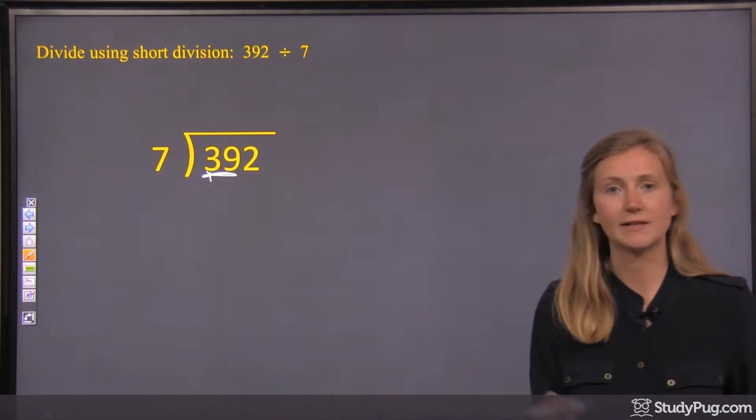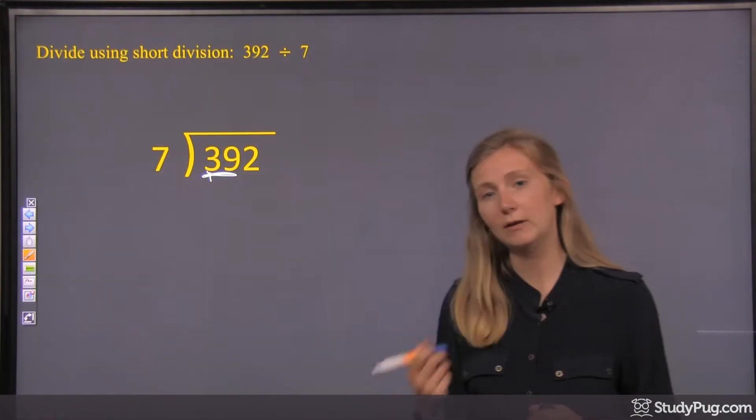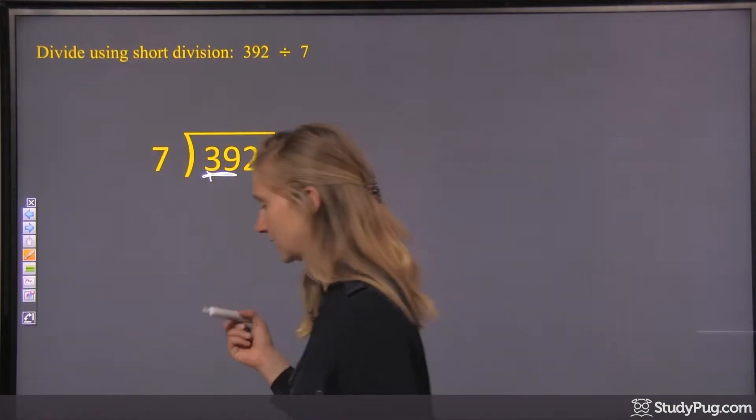Okay, so we're doing 39 divided by 7, or how many 7's fit in 39? Okay, it doesn't go evenly, but let's see what's closest.